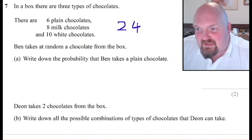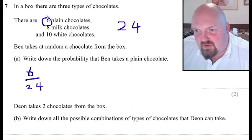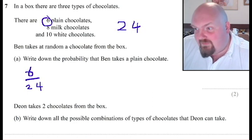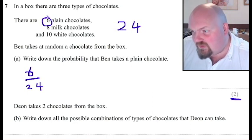So write down the probability that Ben takes a plain chocolate. Well, it's out of twenty-four, so it's going to be a fraction over twenty-four. And you can see here that there are six plain chocolates. So the probability is six out of twenty-four. Now if you look over here, you'll see this question's worth two marks.